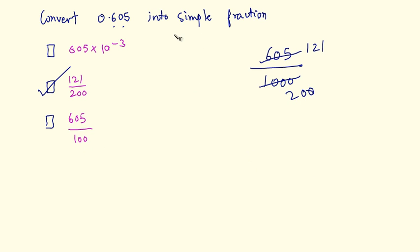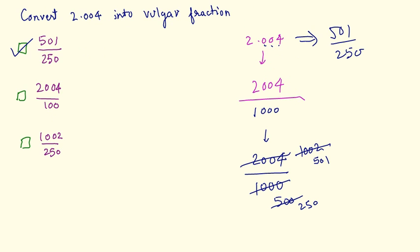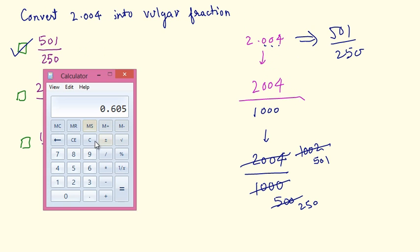This is how you convert a decimal into a simple fraction. One thing to note: when you solve the simple fraction you get back the decimal. If I divide 121 by 200, I get 0.605. Similarly, if I divide 501 by 250, I get 2.004. This confirms our answers are correct.